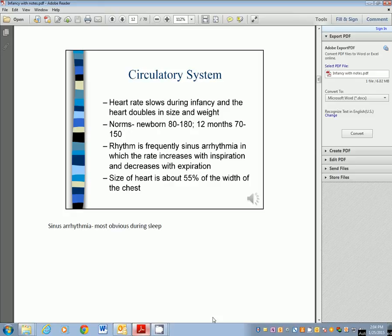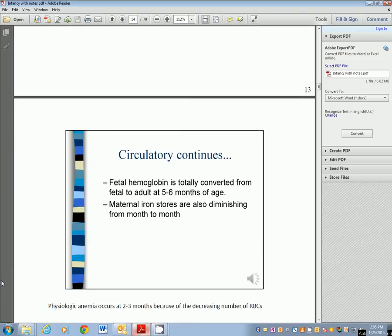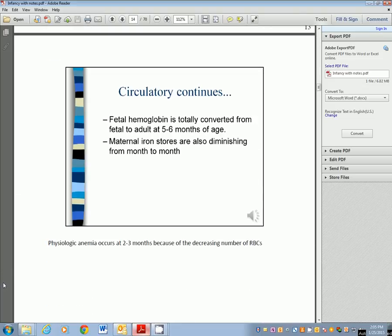Systolic blood pressure is beginning to rise, and that's a result of the increased ability of the left ventricle to pump blood to our systemic system. Blood pressure is relatively low during infancy. Fetal hemoglobin is present for the first five months, but fetal hemoglobin is not as capable of producing mature red blood cells. So they can get what's called physiological anemia, particularly between two and three months of age. Fetal hemoglobin is totally converted to adult at five to six months. Maternal iron stores are starting to diminish from month to month, so you have to be careful to make sure they are getting iron in the diet.